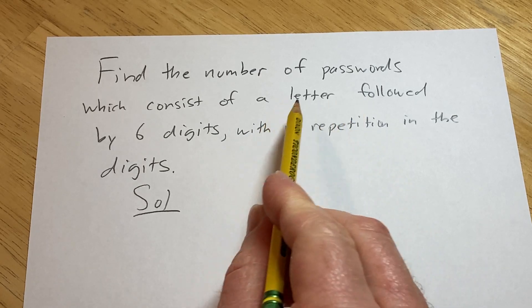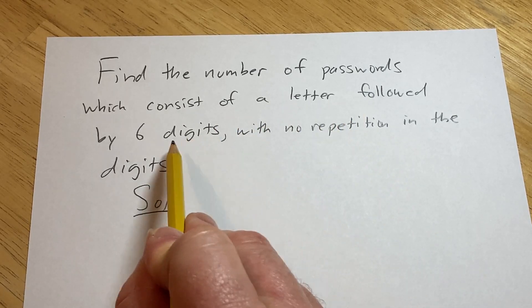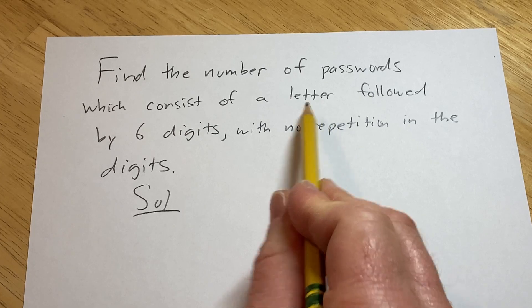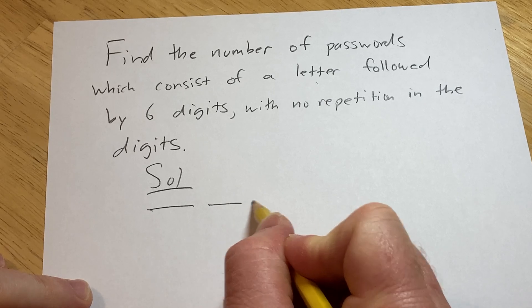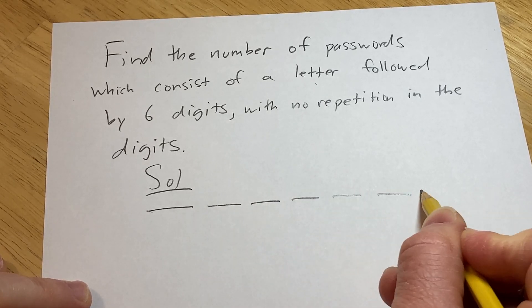So basically we have a password that consists of seven characters, right? We have a letter followed by six digits. So we have a letter and then we have one, two, three, four, five, six.